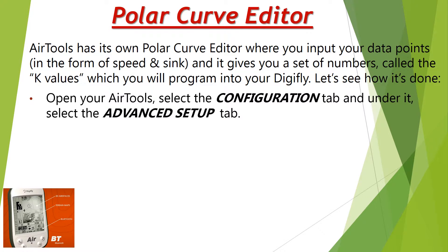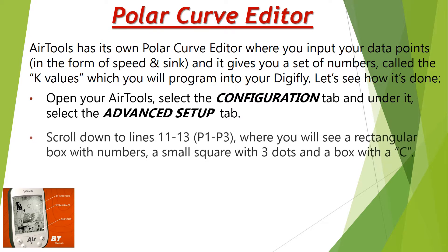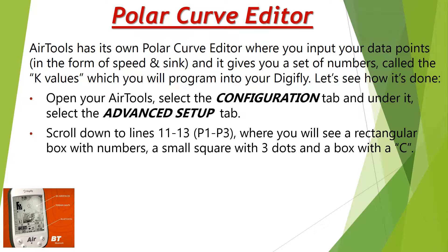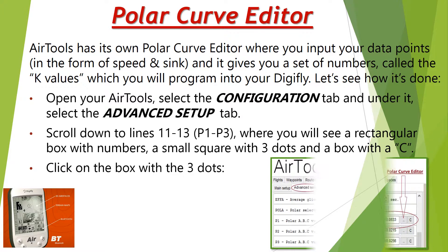Open your Air Tools, select the Configuration tab, and under it select the Advanced Setup tab. Scroll down to lines 11 to 13, which are the Polar 1, Polar 2, and Polar 3 settings, where you will see a rectangular box with numbers, a small square with three dots, and a box with the letter C on it. Click on the box with the three dots.